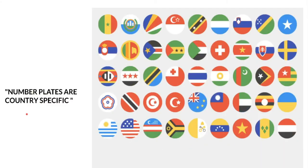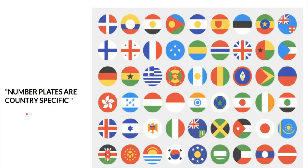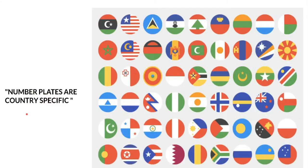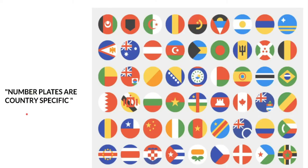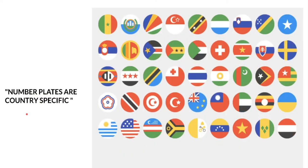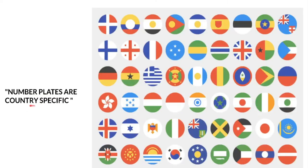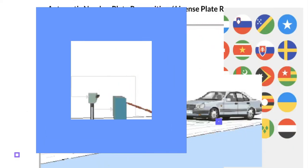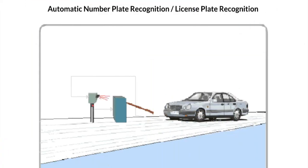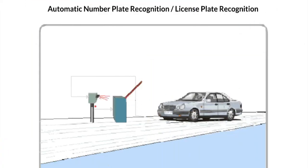One important point is that car number plates are country-specific, meaning the form, shape, and material will differ from country to country. Therefore, the LPR system will be very country-specific because it has to adapt to each country's specific number plate format.